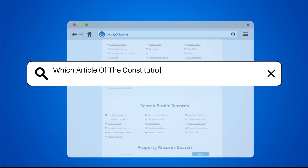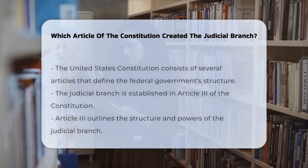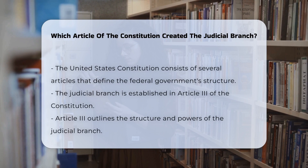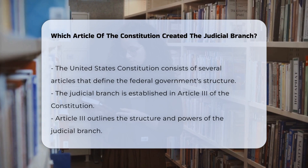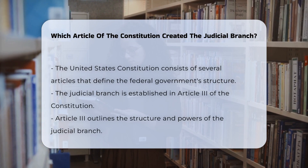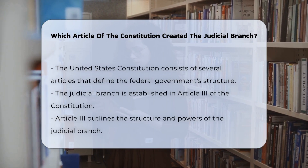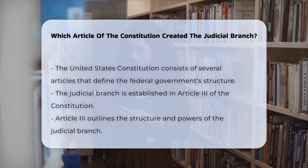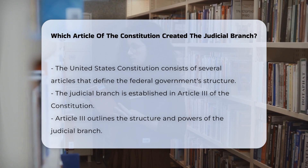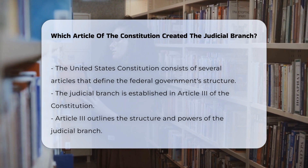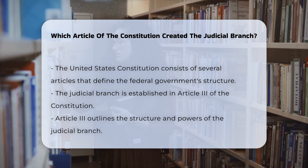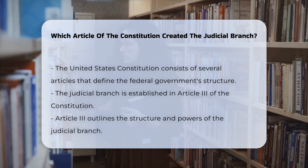Which article of the Constitution created the judicial branch? The United States Constitution is divided into several articles, each addressing a different branch of the federal government. The judicial branch, which is responsible for interpreting the law, is established in a specific article.